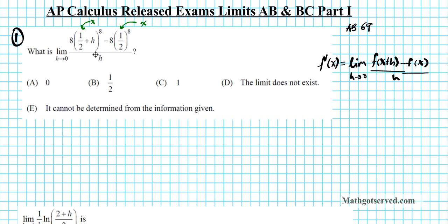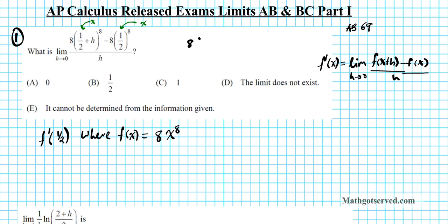Let's translate this into a derivative problem, because if we want to do this algebraically it will take forever to expand this term. This is another way of saying: find the derivative f prime of 1/2, where the function f(x) equals 8x to the 8th power. All I did to generate this function is notice the last term was f(x), and since x is 1/2, I replaced the 1/2 with x, giving 8x^8. So we're evaluating the derivative when x equals 1/2. Using the power rule, f prime of x equals 64x to the 7th power.